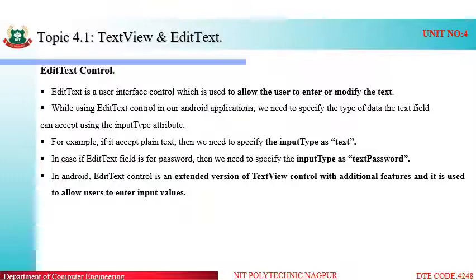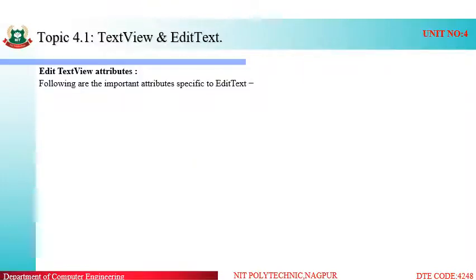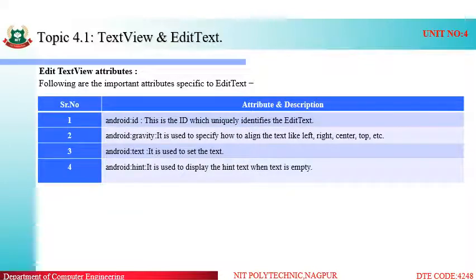In Android, EditText is an extended version of the TextView with additional features, and it is used to allow users to enter input values. These are simple controls we often use to design our user interface — a label and a text box, or in Android, a TextView and an EditText. The main attributes include gravity, which is also present in the TextView control and is used to specify how to align the text, such as left, right, center, or top. The text property is used to set the text, and the hint attribute is used to display hint text when the text field is empty.